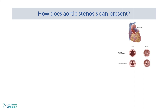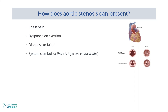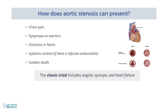How does aortic stenosis present? It can present with chest pain, dyspnea on exertion, dizziness or faints, systemic emboli if there is infective endocarditis, and rarely sudden death. The classic triad includes angina, syncope, and heart failure.